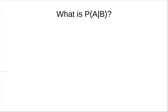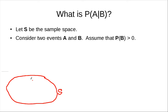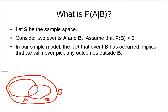Let's see the answer. What is P(A|B)? We know that we have a sample space S, and we know that we have two events, A and B. When we try to compute this, we know that we only consider the case when B actually occurs.